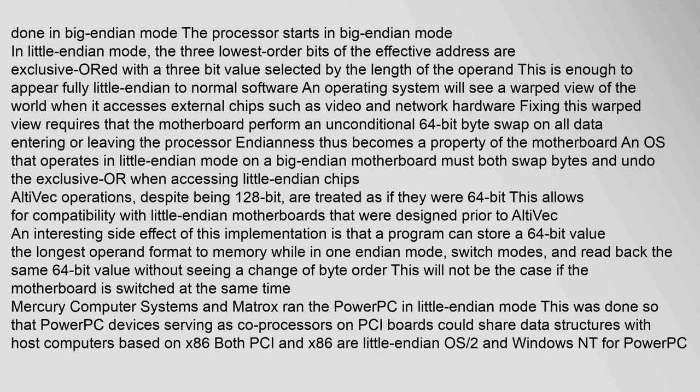Most PowerPC chips switch endianness via a bit in the MSR (Machine State Register), with a second bit provided to allow the OS to run with a different endianness. Accesses to the inverted page table — a hash table that functions as a TLB with off-chip storage — are always done in big-endian mode. The processor starts in big-endian mode. In little-endian mode, the three lowest-order bits of the effective address are exclusive-ORed with a three-bit value selected by the length of the operand. This is enough to appear fully little-endian to normal software, but an operating system will see a warped view of the world when it accesses external chips such as video and network hardware.